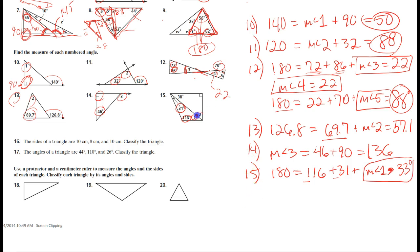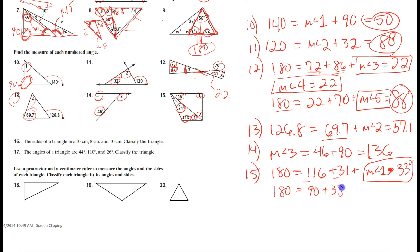For angle two in problem fifteen: here's thirty-eight, here's ninety. These three angles inside the triangle add up to one hundred and eighty. Ninety plus thirty-eight plus the measure of angle two equals one hundred and eighty. Subtracting ninety and thirty-eight from both sides gives angle two equals fifty-two degrees.